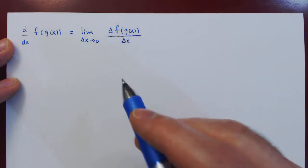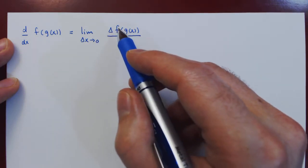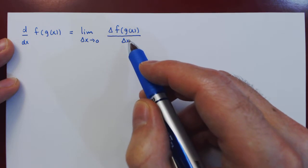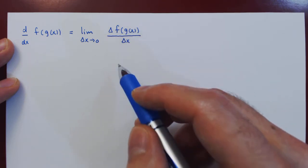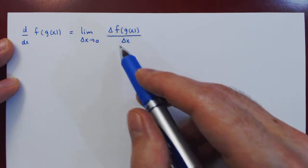And already we notice a bit of a problem, right? The change in f is not around x, but around g of x, a different point than x. So we don't quite have a derivative here.